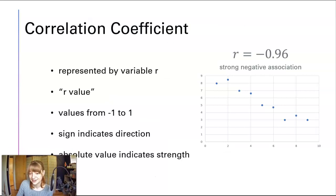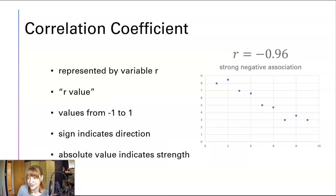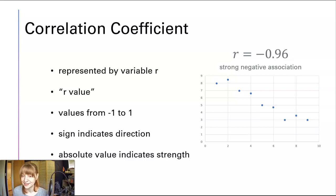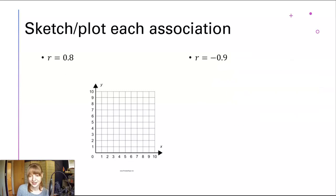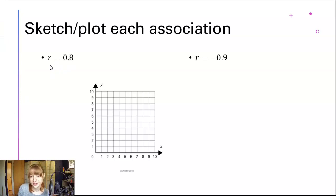Here is our summary slide for correlation coefficient, also known as an R value. You can pause the video and take a screenshot of this if you don't have this in your notes already. Now let's try sketching a scatter plot for some R values.